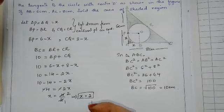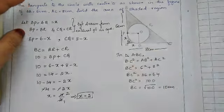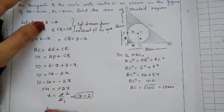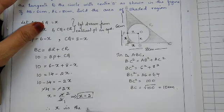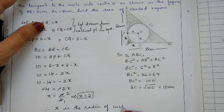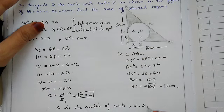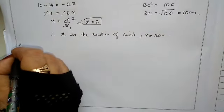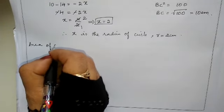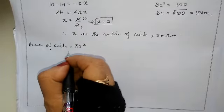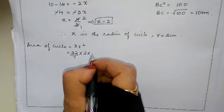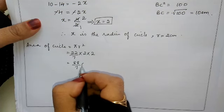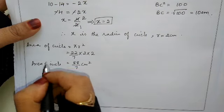X equals 2 is the radius of the circle. We can see that since there is a square at the tangent point, all sides equal X, confirming X is the radius. So radius equals 2 cm. Now let us find the area of the circle.